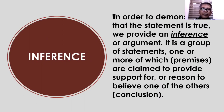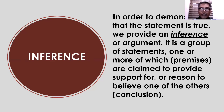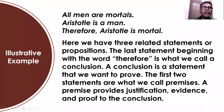The last process under acquiring knowledge is inference. In order to demonstrate that a statement is true, we provide an inference — sometimes called an argument. It is a group of statements, one or more of which are claimed to provide support — called premises — as a reason to believe one of the others, which we call the conclusion. For example: 'All men are mortals' is the first premise; 'Aristotle is a man' is the second premise; 'Therefore, Aristotle is mortal' is the conclusion. This group of propositions or statements we call inference or argument.